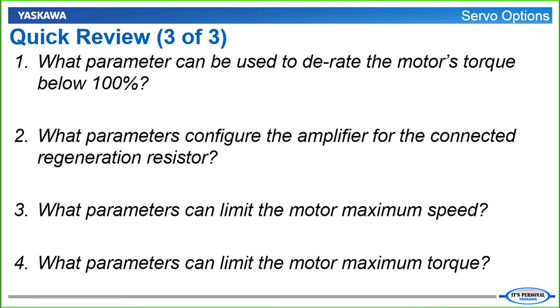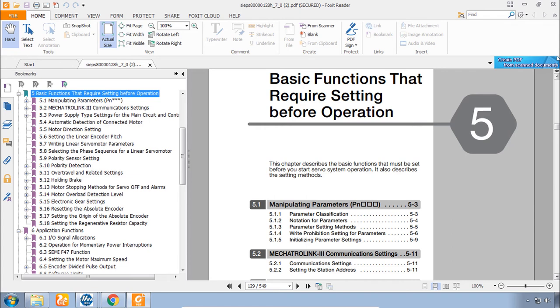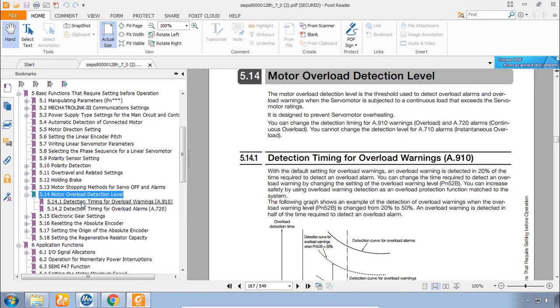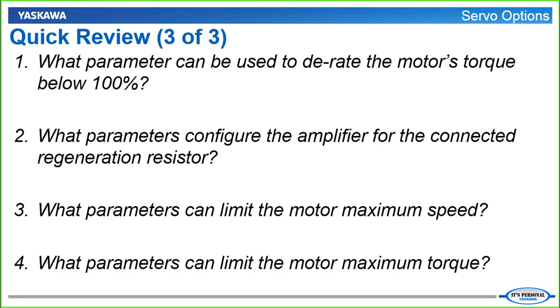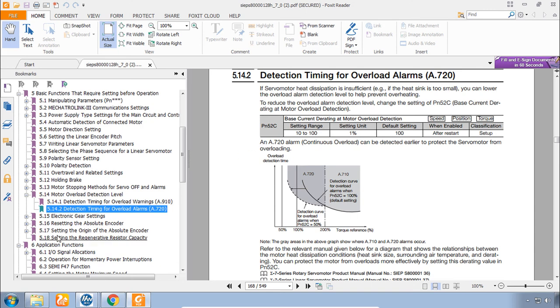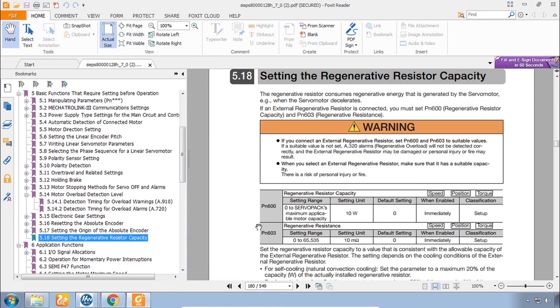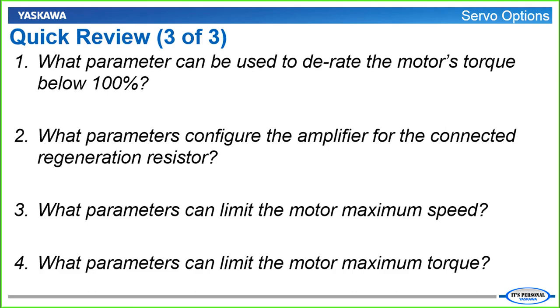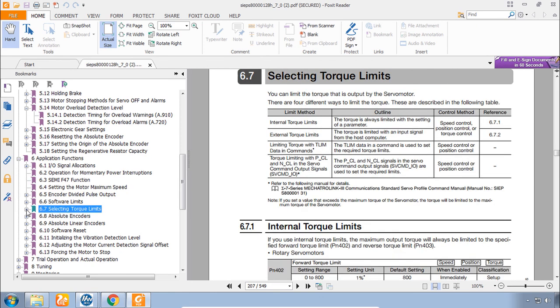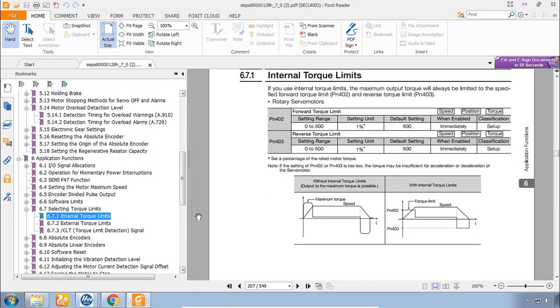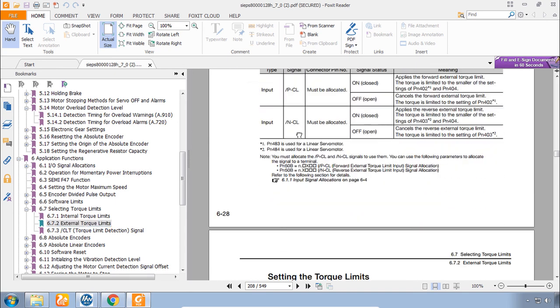OK, number one. Derating the motor's torque below 100%. That's in section 5.14. And it's not the overload warning time. It's called detection timing for overload alarms. Parameter PN52C is the answer. Number two. Configuring the regen resistor. That's a couple sections down in 5.18. And the parameters are PN600 and PN603. Number three. Parameter to limit motor's speed. We find that one down here in 6.4 setting motor max speed. And it was parameter PN316 for rotary and 385 for linear. And parameters to limit max torque. Max torque we skip down here to 6.7. Torque limits. With the internal torque limits set with PN402 and 403. Active always although they can be changed by the controller. And external torque limits activated by inputs. In PN404 and PN405.